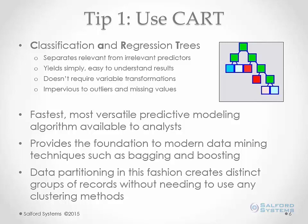CART is impervious to outliers and missing values. It has been around since the early 80s and is known as the fastest, most versatile predictive modeling algorithm available — it's the foundation to modern data mining techniques including boosting and bagging. Data partitioning in a decision tree creates distinct groups of records, so you don't need to use specific clustering methods — it kind of makes clusters on its own.